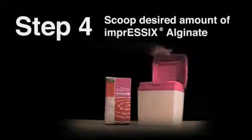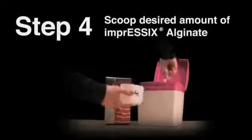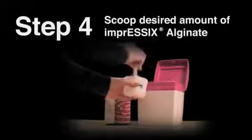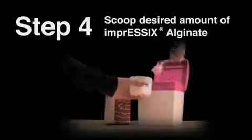Using the provided scoop, place the desired amount of Impressex into the mixing cup. The edge of the canister can be used to level the scoop of alginate. Mix Impressex Alginate using a 1 to 1 powder to water ratio. A standard upper impression requires 3 scoops of alginate.